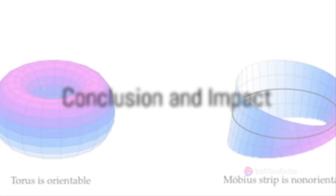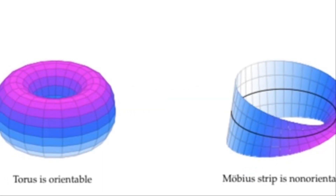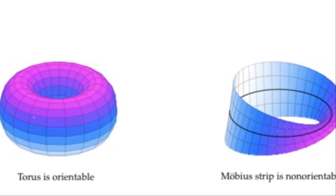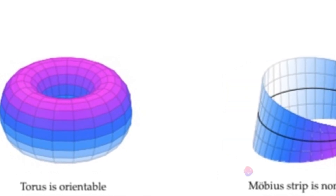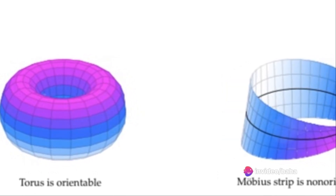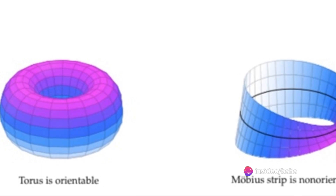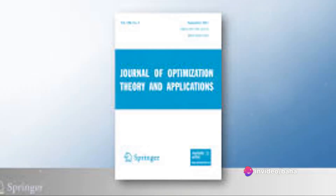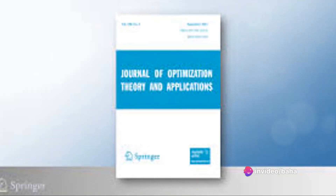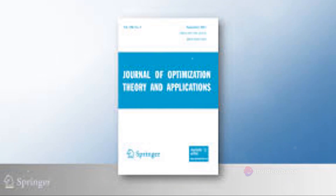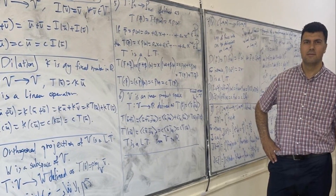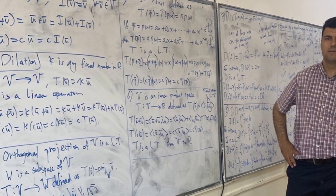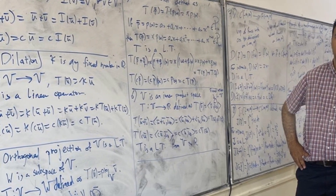In essence, this paper expands the horizons of mathematical and theoretical understanding of non-convex SOCs. It opens doors to further exploration and potential applications in diverse fields, from operations research to modern physics. Published in the Journal of Optimization Theory and Applications in 2024, this work by the group of Professor Baha-Alzog can be a remarkable contribution to the field.